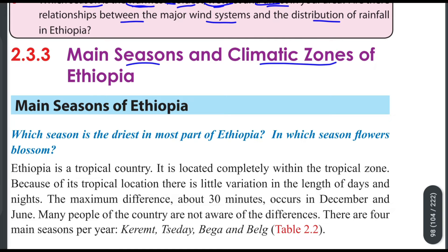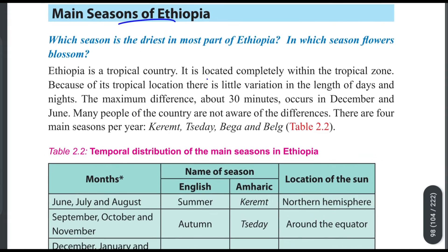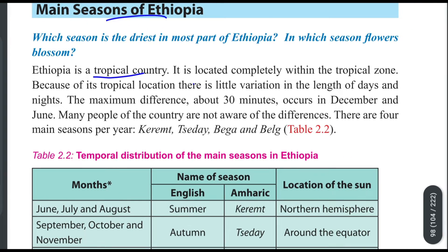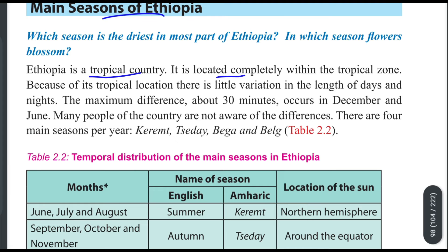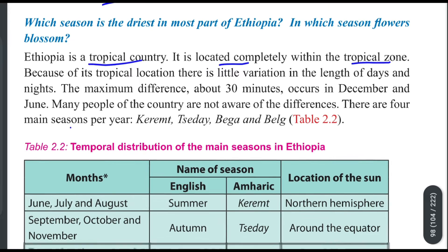Main seasons and climatic zones of Ethiopia. Ethiopia is a tropical country located completely within the tropical zones. Because of its tropical location, there is little variation in the length of days and nights. The maximum difference is about 30 minutes in December and June.